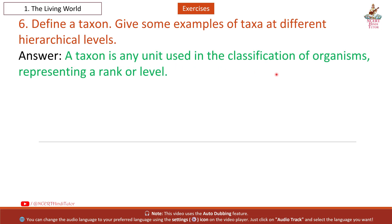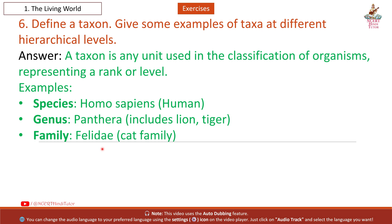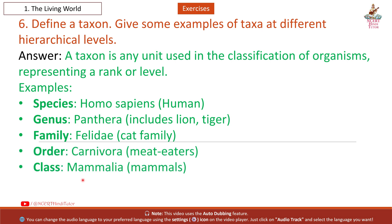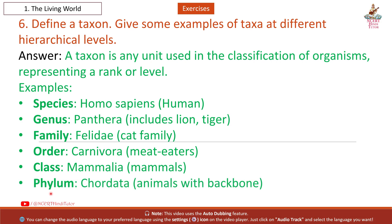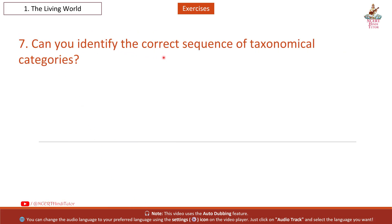Question 6: Define a taxon and give some examples of taxa at different hierarchical levels. Answer: A taxon is any unit used in the classification of organisms, representing a rank or level. Examples: Species — Homo sapiens (human); Genus — Panthera (includes lion, tiger); Family — Felidae (cat family); Order — Carnivora (meat eaters); Class — Mammalia (mammals); Phylum — Chordata (animals with backbone); Kingdom — Animalia (all animals).